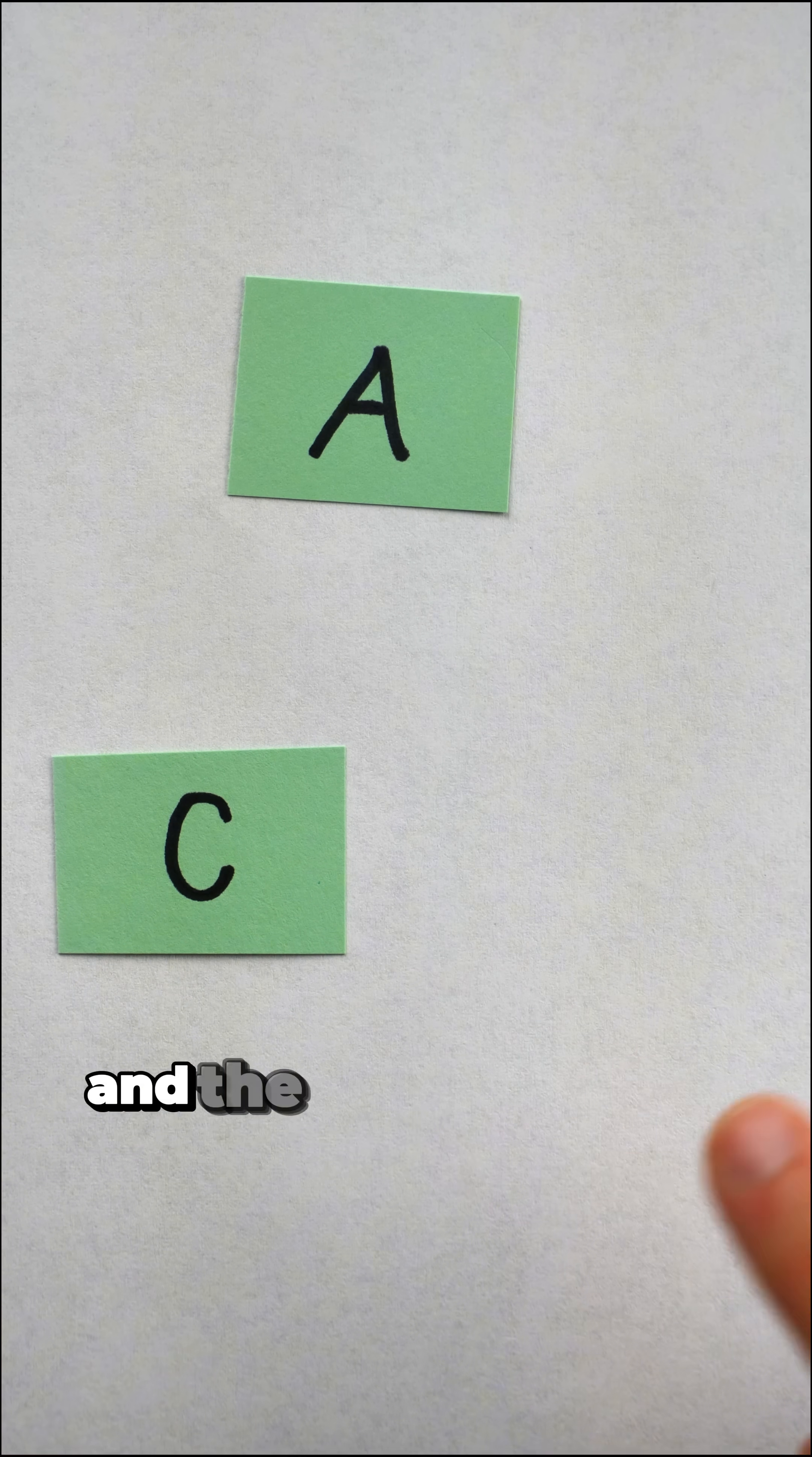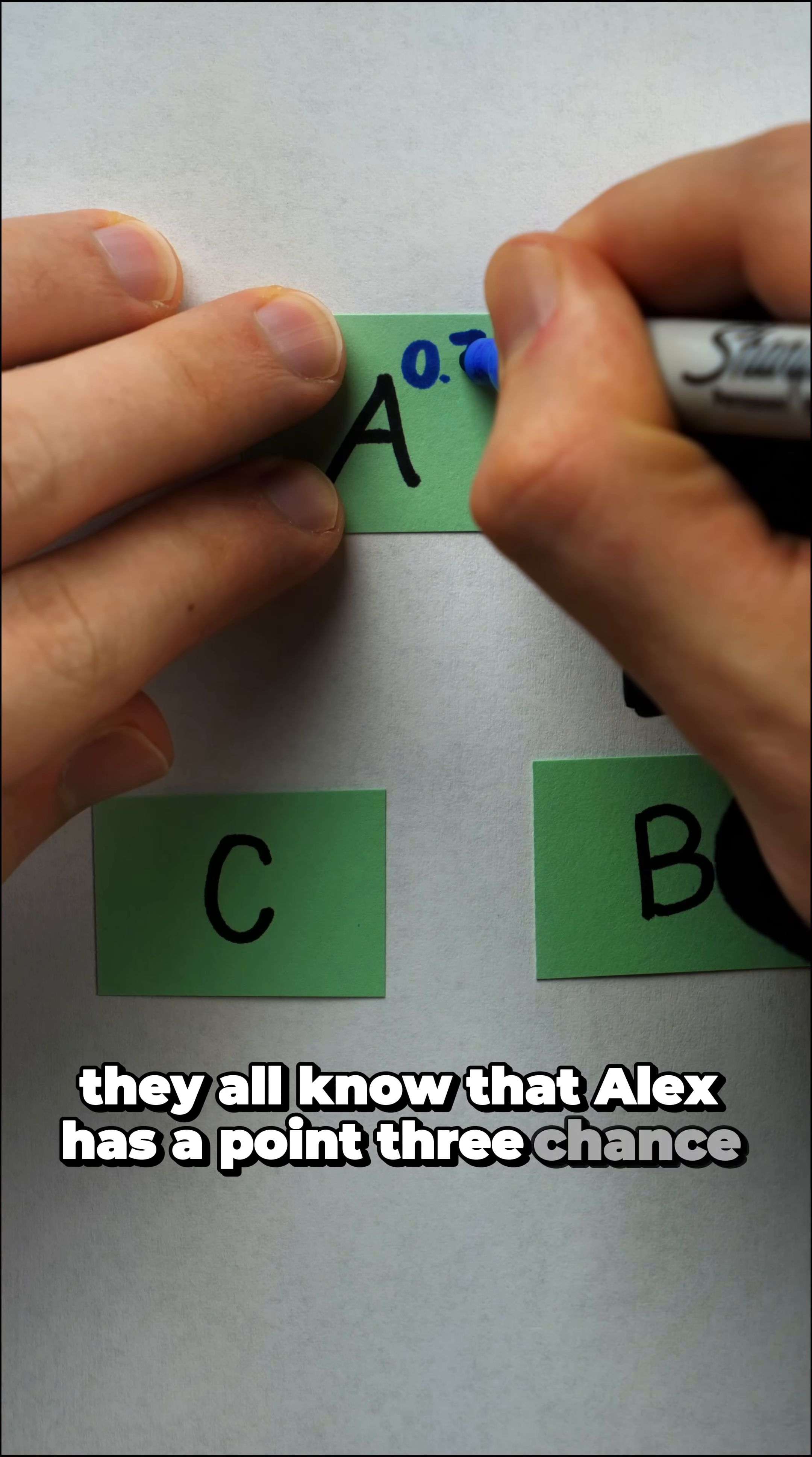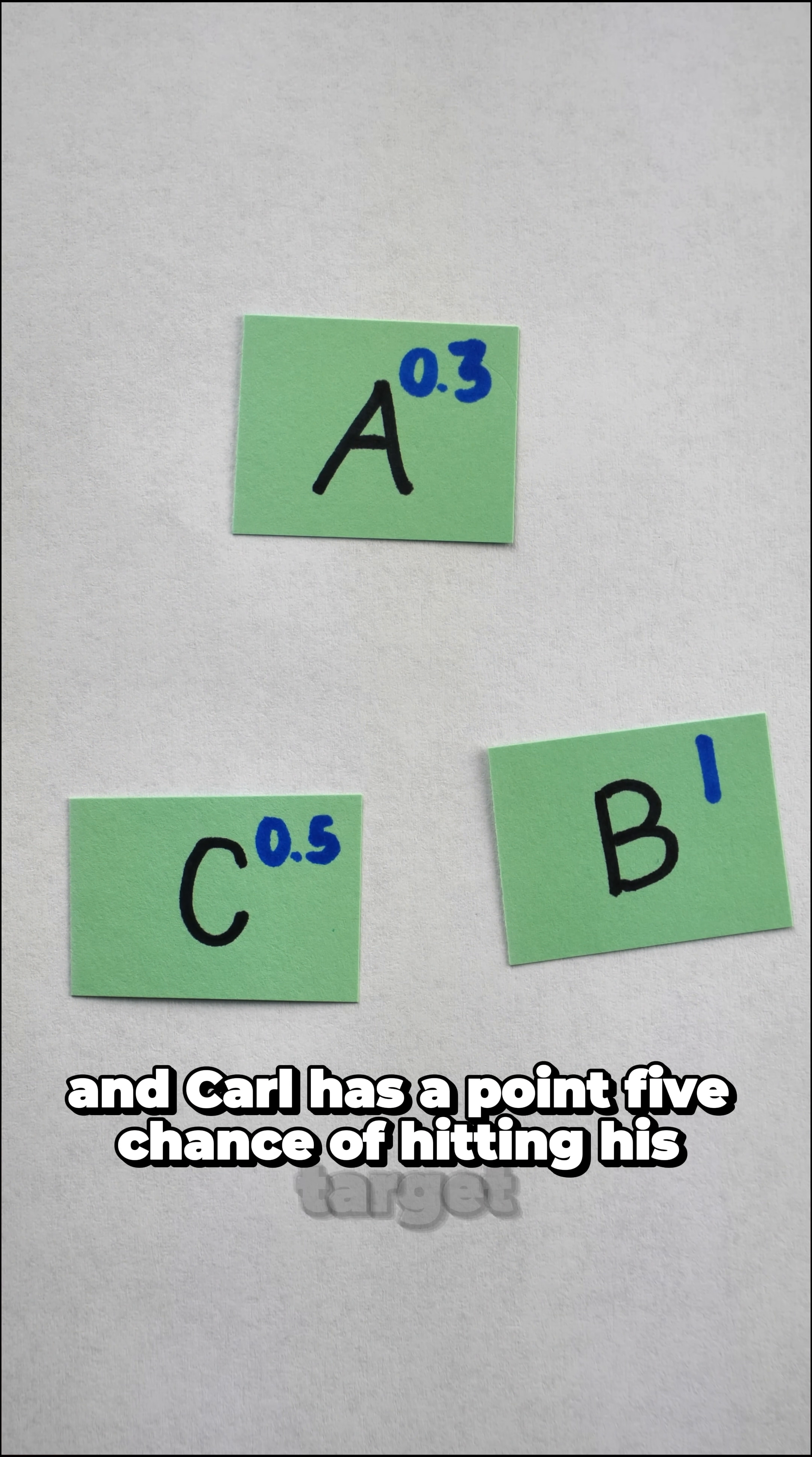If someone is hit, they are eliminated, and the remaining two mortals will alternately take shots. They all know that Alex has a 0.3 chance of hitting his target. Bridget is a guaranteed sure-fire hit, and Carl has a 0.5 chance of hitting his target.